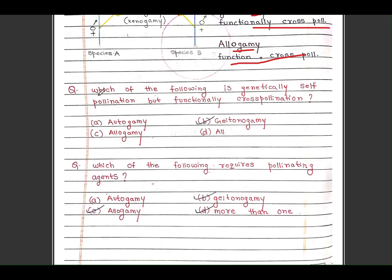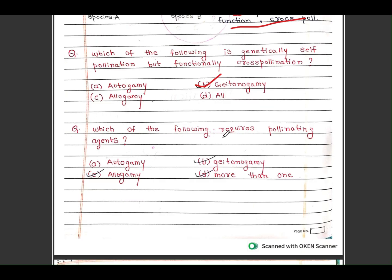Questions: Which one is genetically self-pollination but functionally cross-pollination? Autogamy, geitogamy, allogamy, or all? Answer is geitogamy. Which requires pollinating agents? Answer is more than one: geitogamy and allogamy.